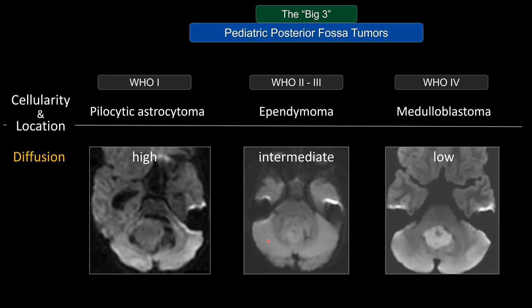Perhaps the most useful sequence to judge cellularity is the diffusion-weighted sequence. For pilocytic astrocytoma, the hypocellular tumor, they tend to have high diffusivity, whereas a hypercellular tumor like medulloblastoma tends to have restricted diffusion compared to adjacent tissue. Ependymoma is somewhere in between.